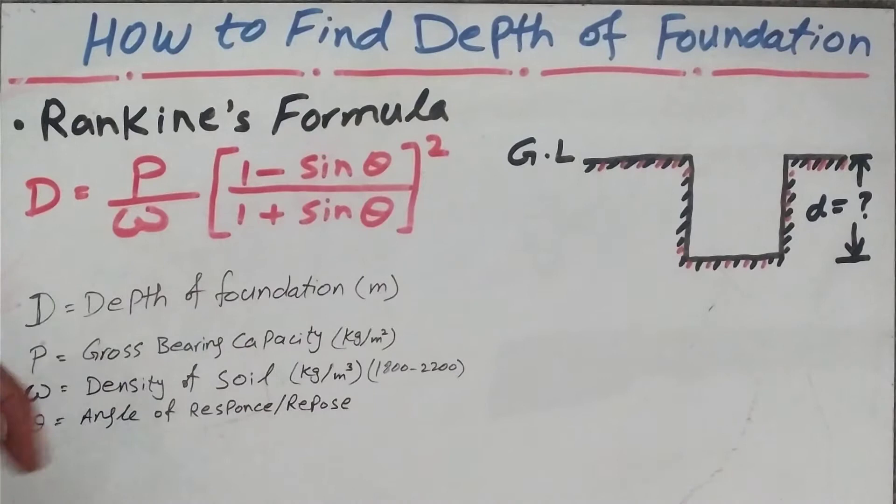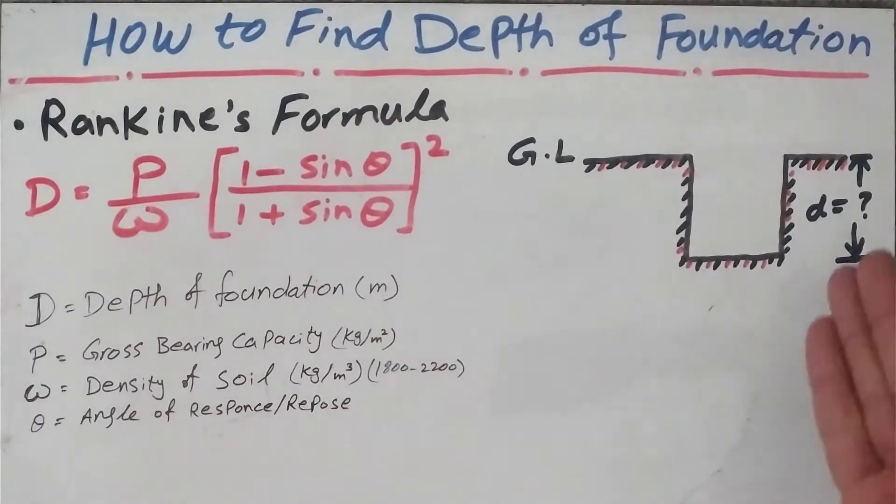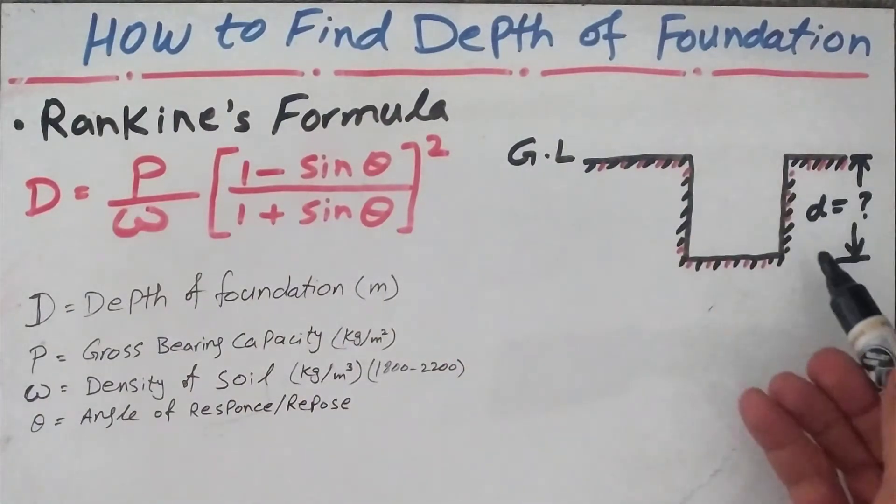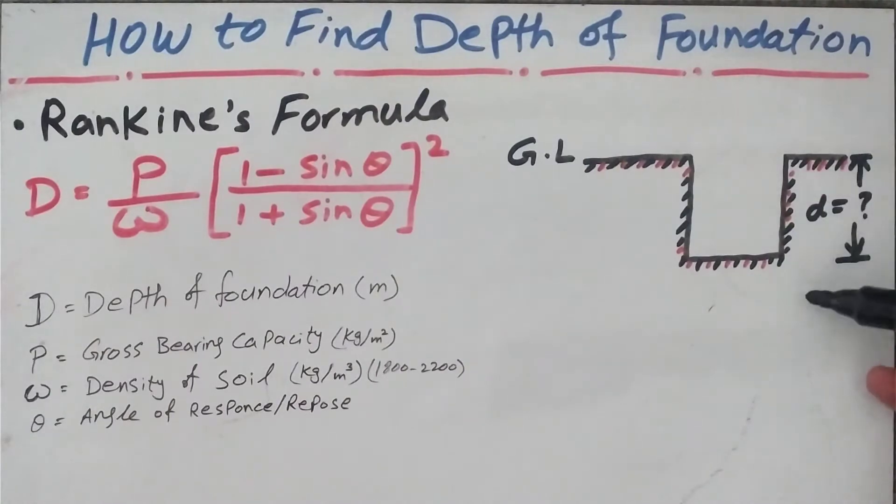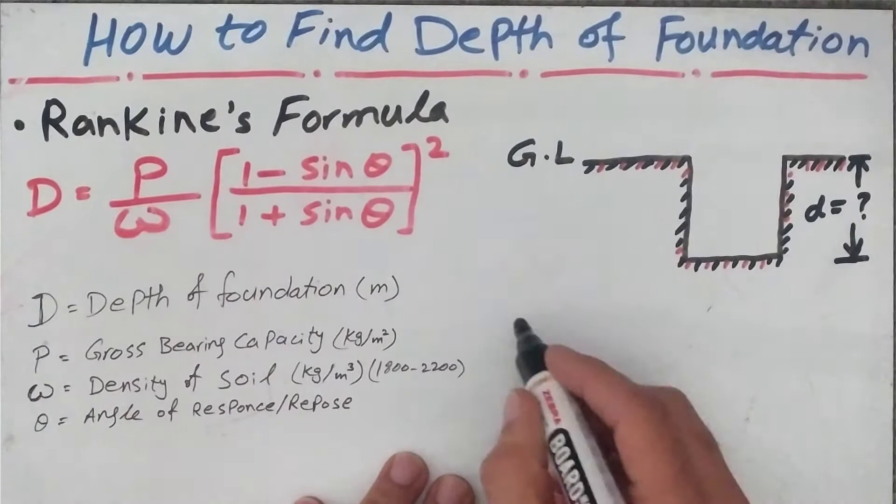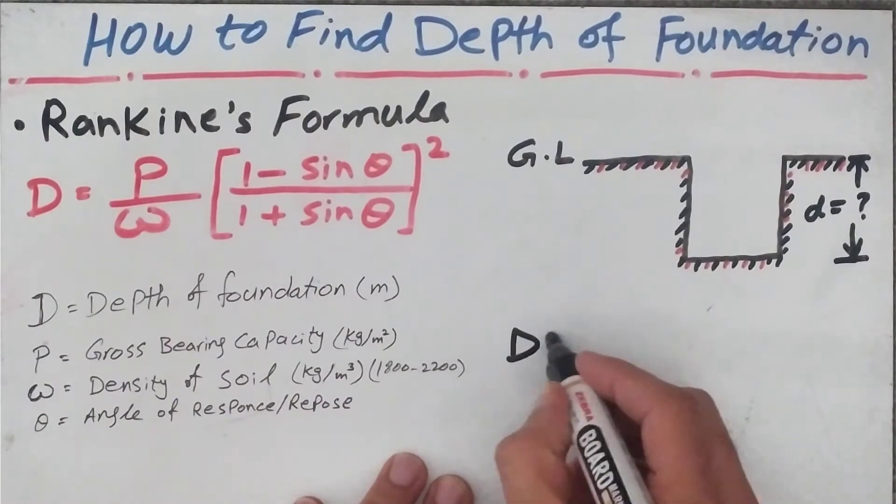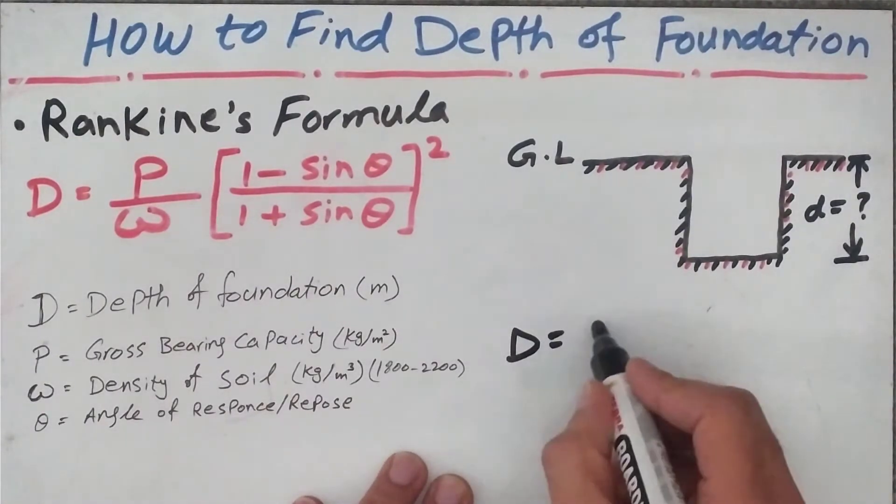And finally we have the angle of response or angle of repose for the soil. In this case, we can take any random numbers. As you can see, this is our ground level, this is a diagram, and this is the depth of our foundation.